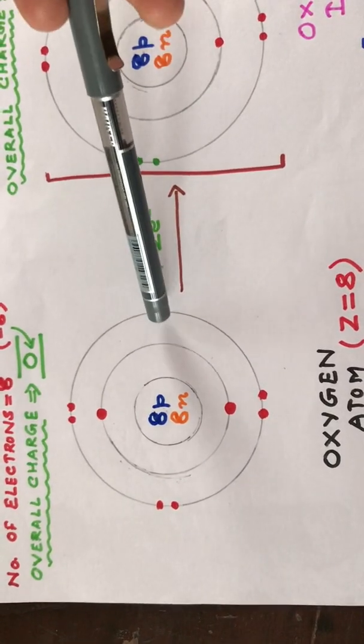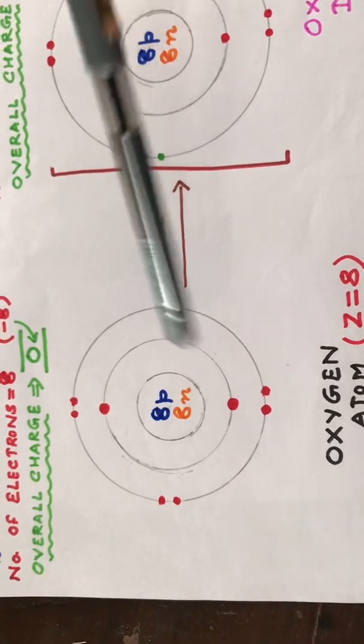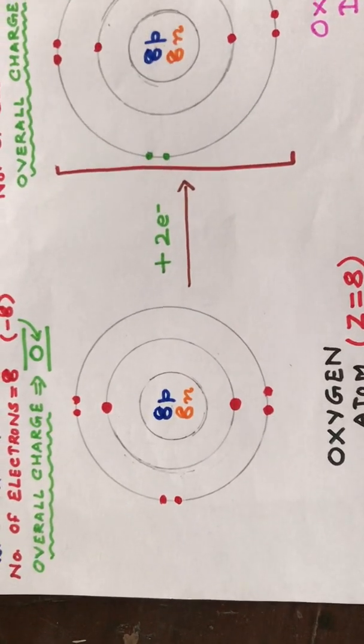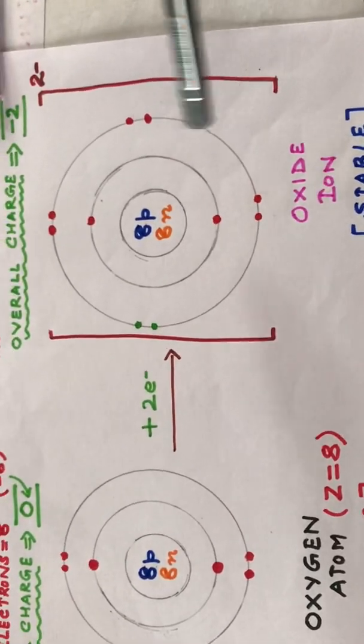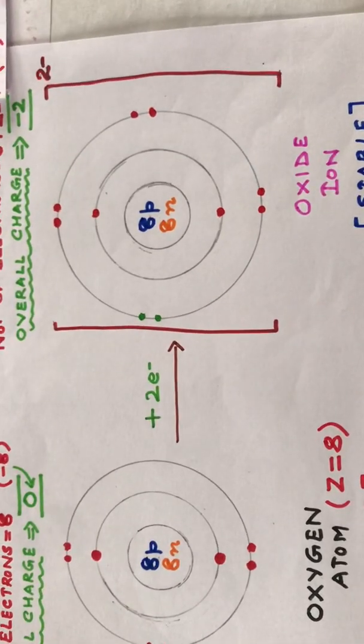Oxygen gains two electrons from some other atom and in turn becomes chemically stable. It now has eight electrons in its outermost shell and follows the octet rule.